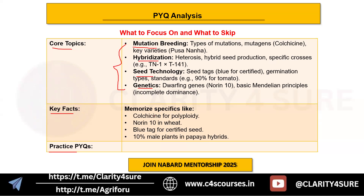For key facts, memorize specifics like colchicine for polyploidy and Norin — or any specific genes involved in plant breeding, such as specific genes in maize, rice, and barley. Also memorize all the tags of seed technology, the percentages in hybrid production for various crops, and the parameters for maintaining female-to-male ratios. Practice PYQs to familiarize yourself with question patterns and recurring themes.